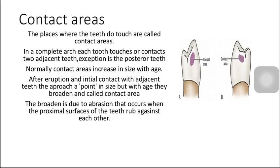First of all, I have to discuss the contact areas. Contact areas are actually the places where two adjacent teeth touch each other. In a complete arch, the two adjacent teeth touch each other and it goes on from anterior to posterior. But here we have an exception — the posterior-most tooth touches on one side but on the other side there are no other teeth.